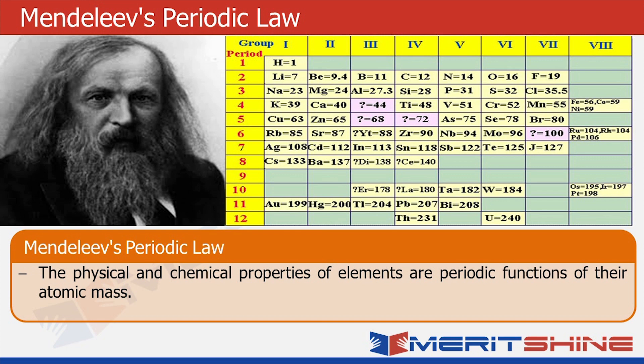In a periodic table, horizontal lines are called periods and vertical lines are called groups. Well, this was the precursor to our modern periodic table. There were some anomalies which were evident in the Mendeleev's periodic table as well.